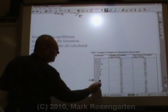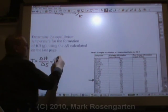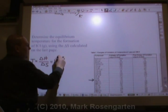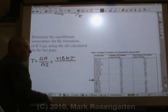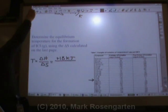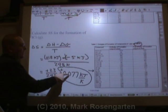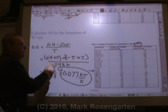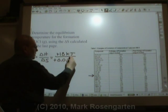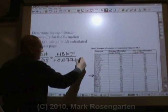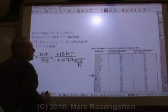Now, delta H for iodine chloride is positive 18. Positive 18 kilojoules divided by, well, what did we calculate delta S to be? Positive 0.077.